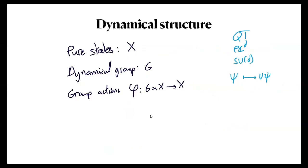The dynamical structure of a system is its set of pure states X, the dynamical group G acting on X, and a group action telling you how G acts on X. In the case of quantum theory, the pure states correspond to rays in a d-dimensional complex space. The dynamical group is SU(d), and the group action is given by ψ maps to Uψ.